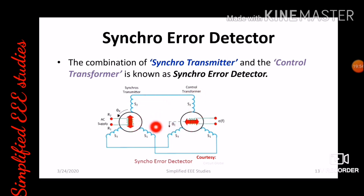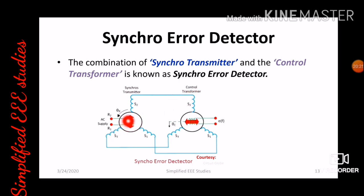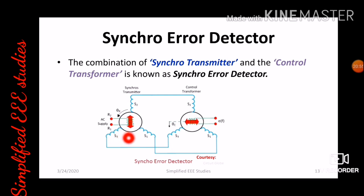Now let us explain the brief working of the synchro error detector. Consider the synchro transmitter — its two main components are rotor and stator. The control transformer also has stator and rotor as main components. In the synchro error detector, you connect the stator windings of the synchro transmitter and the control transformer to each other: S1 to S1, S2 to S2, and S3 to S3 — mutually connected.